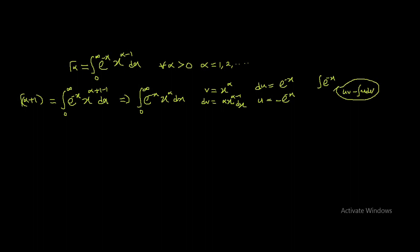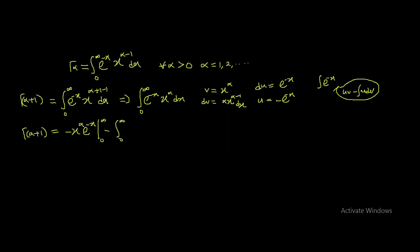So Gamma(alpha + 1) is going to equal, substituting into the formula: minus x^alpha * e^(-x) evaluated from 0 to infinity, minus the integral from 0 to infinity of minus e^(-x) times alpha * x^(alpha - 1) dx. The minus signs and alpha can be taken outside.